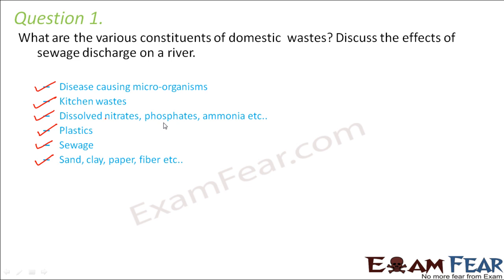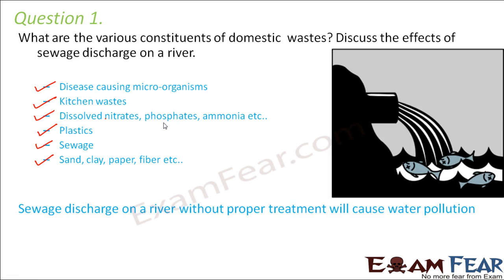What can happen if we dispose sewage into a river without proper treatment? That can be extremely harmful. Without proper treatment it will definitely cause water pollution because it has so many harmful substances within it. Proper treatment involves primary treatment where all solid particles are removed, followed by secondary treatment where dissolved organic matter gets removed by the action of microorganisms. Without doing that, the entire water gets polluted.